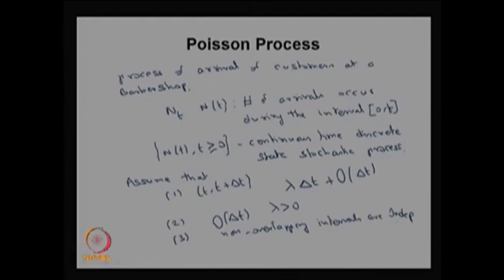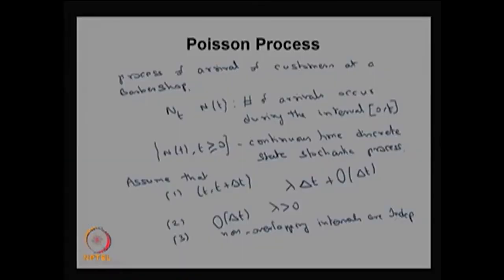This is a very important assumption. The probability that arrivals occur in non-overlapping intervals equals the product of the probabilities of arrival in each individual interval. Therefore, it satisfies the independence property. With these three assumptions, we are going to develop the Poisson process.